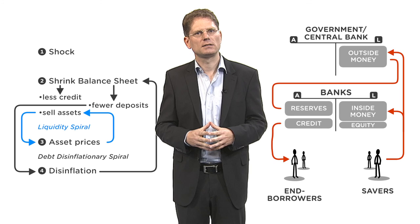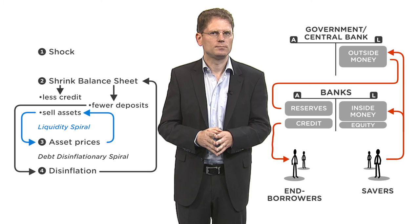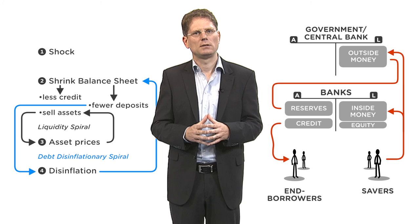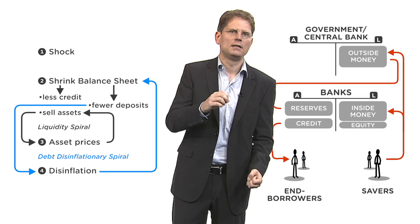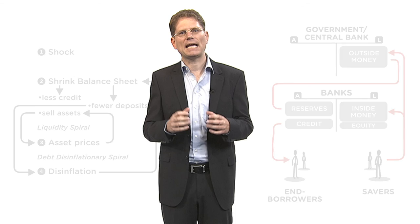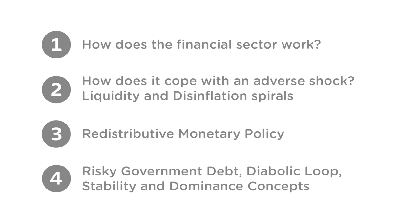Because of the liquidity spiral, we have less new credit, fire sales, declines in asset prices, and declines in investment and economic growth. On the liability side, the disinflation spiral is at work: deposits decline, the real value of money and debt rises, and the money multiplier collapses. Overall, banks' adverse shocks are amplified and can persist. Both lead to systemic risk — risk endogenously generated by the system. To sum up, part two of this video series taught us how spirals amplify a small adverse shock if central banks stay passive. Click on part three to learn how monetary policy can contain the amplification.